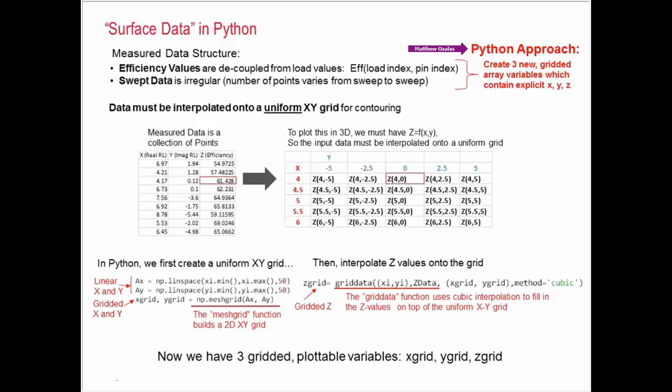The approach I'm going to talk about is we'll create three new gridded array variables, which each contain explicit X, Y, and Z information. Then we can manipulate and plot that data however we'd like. To get any kind of meaningful 3D surface plot in Python, you need to interpolate the data onto a uniform grid. What I mean by that is the simulation or measurement system gives you a bunch of scatter points. You'll have X, which is the real load value. Then you'll have Y, which is the imaginary load value. And then you'll have a Z value, maybe that's efficiency or power. You just get a number of points that are taken by the measurement system. But what we need to get is a uniform grid. We have to have the X and Y in a uniformly spaced manner, and then for each Z value, that needs to correspond to this gridded set of variables.